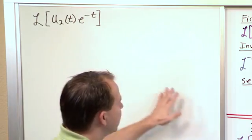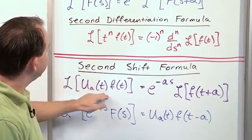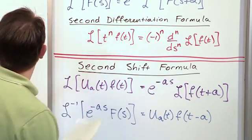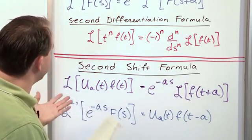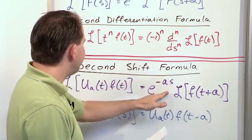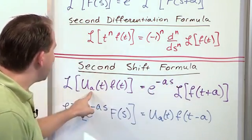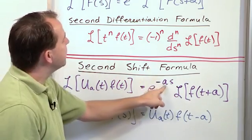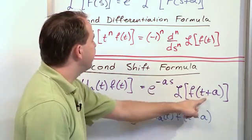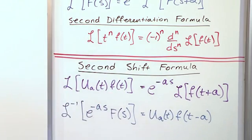So we look at our shift formula — the second shift formula. If you're taking the Laplace of a step times something we know how to take the Laplace transform of, which we do, then you pull out the exponential e to the minus a·s. Whatever time you're stepping at, you get e to the minus a·s out there. And then you take the Laplace of the shifted version of your function.